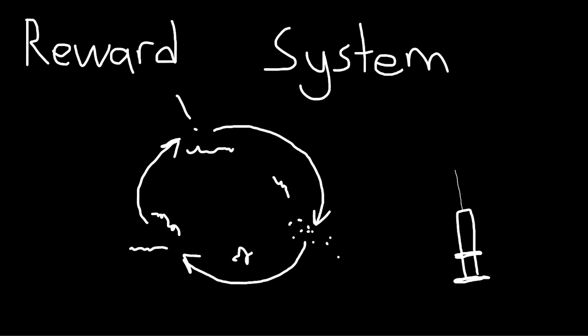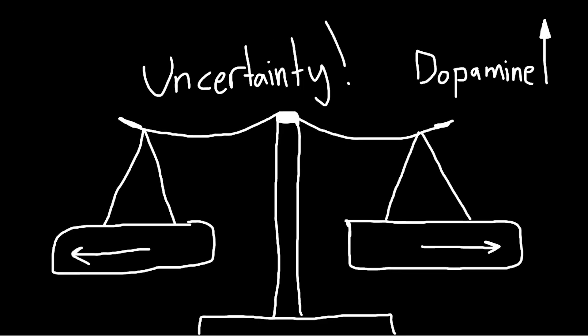When we do anything that's considered rewarding, like eating food, taking drugs, or making a good trade, our brain's reward system activates. And guess what? It also happens when the reward is uncertain. Sounds a lot like trading to me.